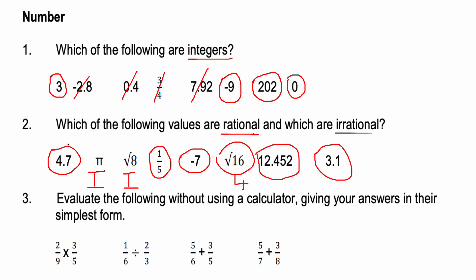Question three: evaluate the following using the calculator, giving your answers in simplest form. When multiplying fractions, just times the numerators together and the denominators together. Two times three is six, nine times five is 45. We can simplify this fraction by dividing top and bottom by three, giving an answer of 2/15.